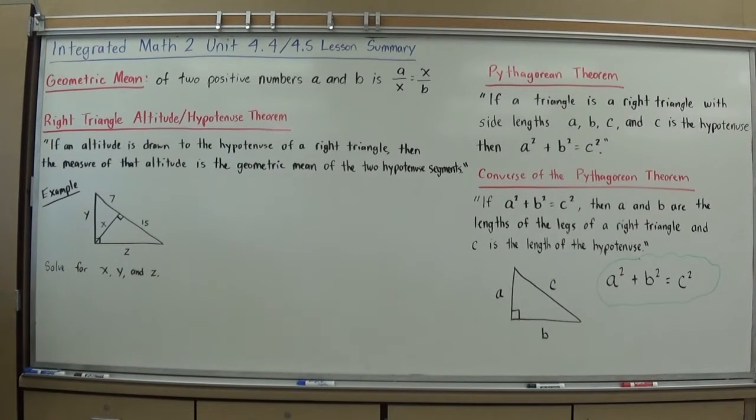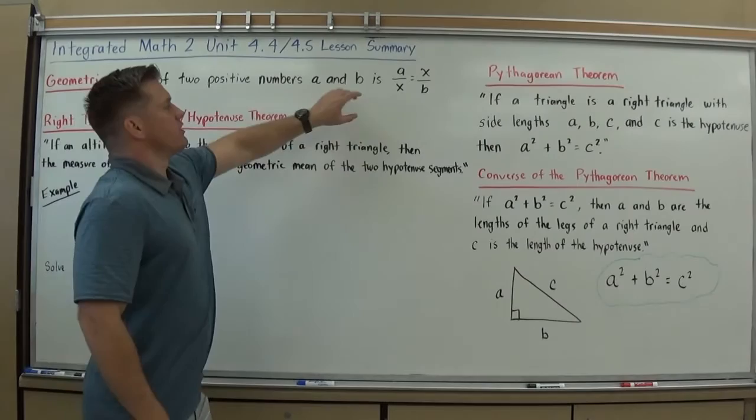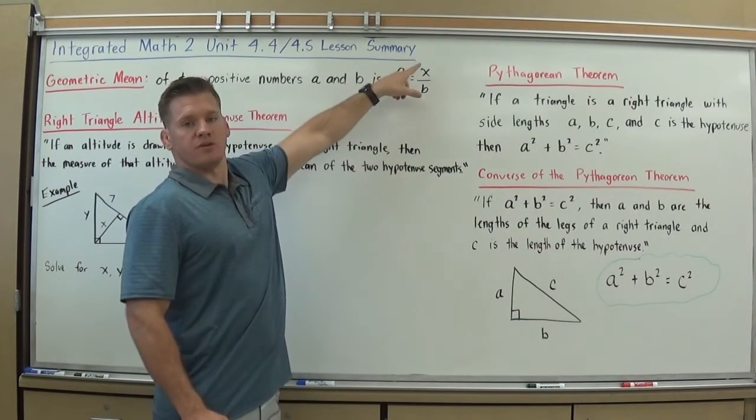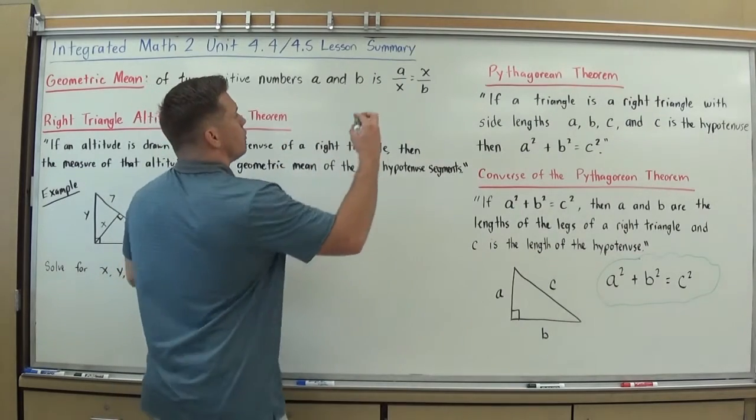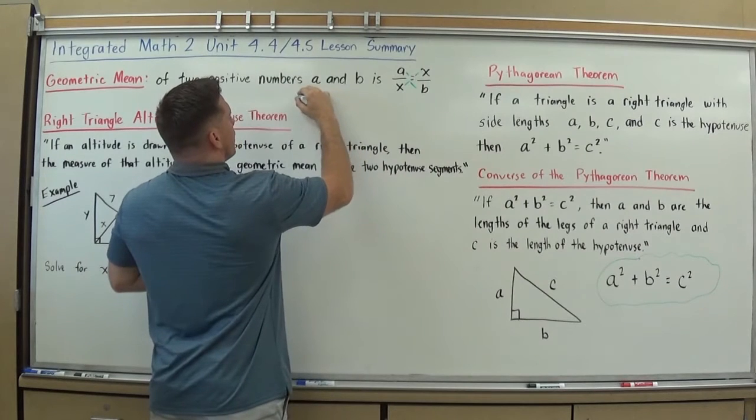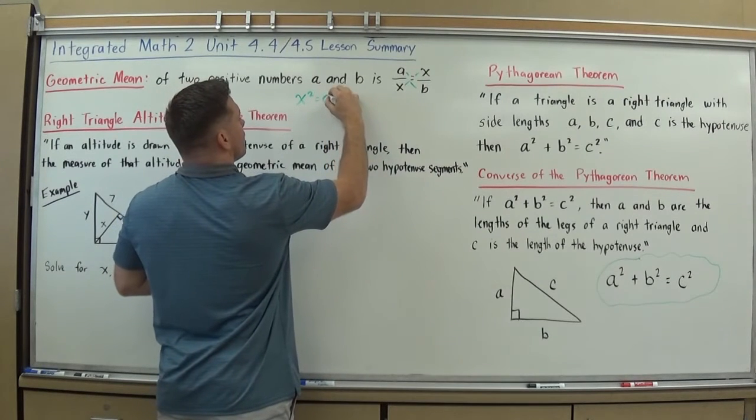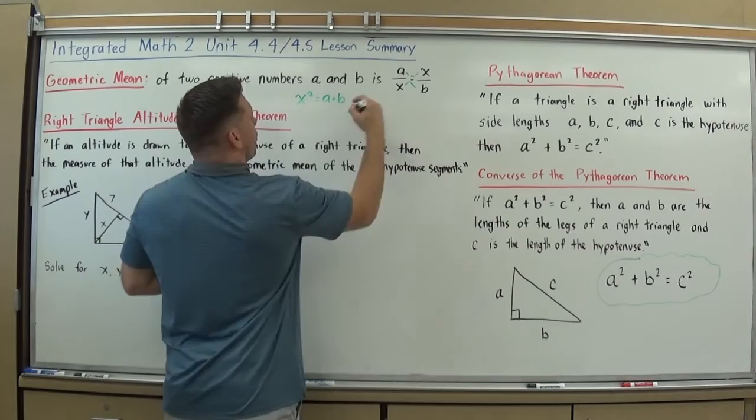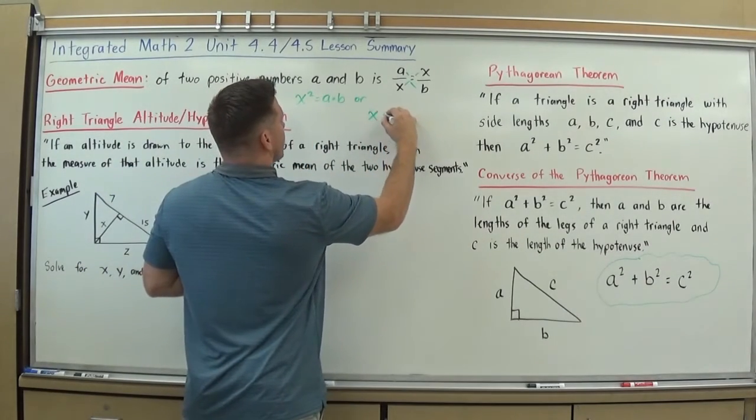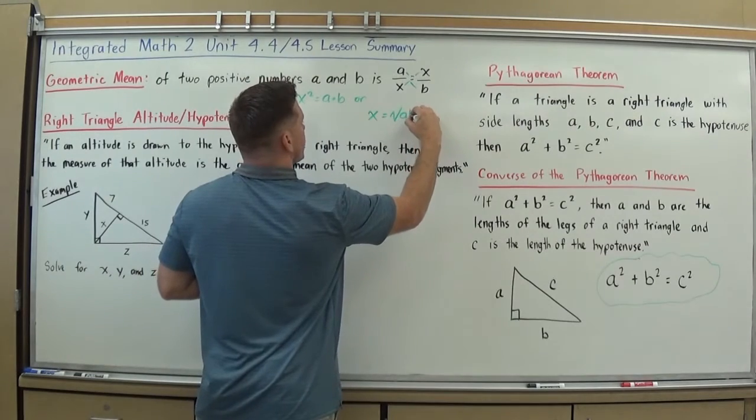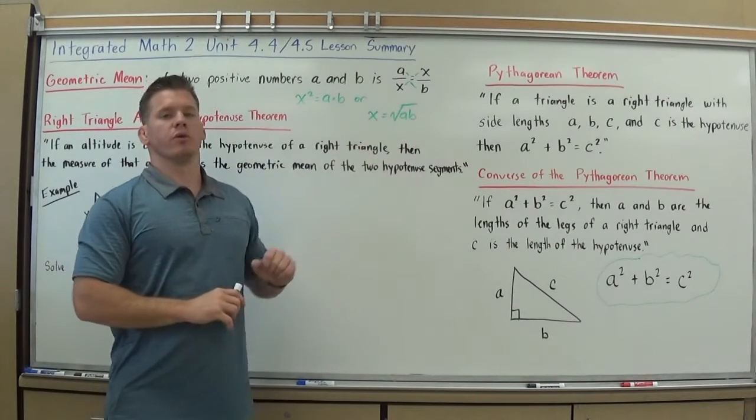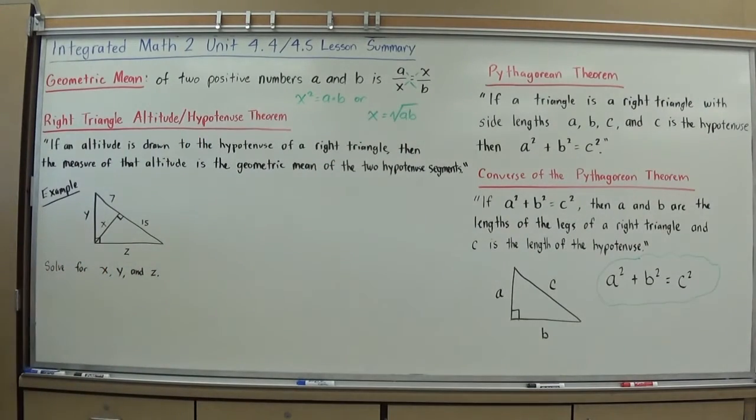Geometric mean of two positive numbers A and B is such that you have this ratio. Side length A over X equals that same side length X over B. When you go ahead and work out the cross multiplying here, when you do a geometric mean, you end up with X squared equals A times B. Or if you were to finish solving this and get X isolated, X equals the square root of A times B. And some textbooks show it that way, that the geometric mean of two numbers is the square root of the two numbers multiplied together, A times B.